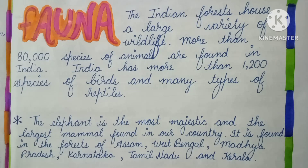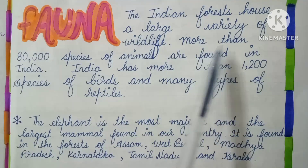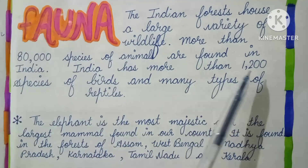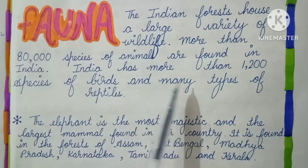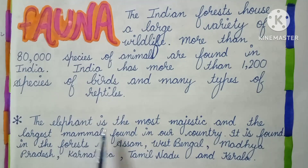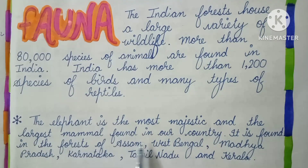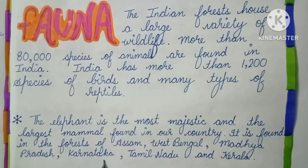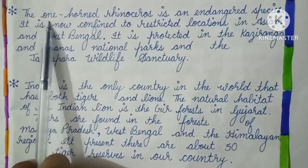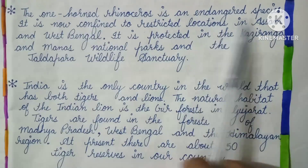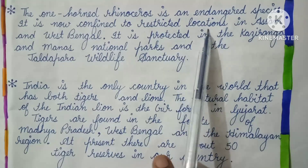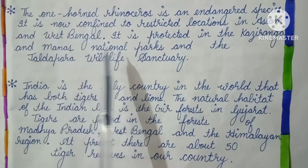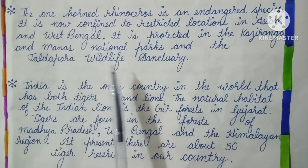Now, Fauna. The Indian forests house a large variety of wildlife — more than 80,000 species of animals are found in India. India has more than 1,200 species of birds and many types of reptiles. The elephant is the most majestic and the largest mammal found in our country. It is found in the forests of Assam, West Bengal, Madhya Pradesh, Karnataka, Tamil Nadu and Kerala. The one-horned rhinoceros is an endangered species, now confined to restricted locations in Assam and West Bengal. It is protected in the Kaziranga and Manas National Park and the Jaldapara Wildlife Sanctuary.